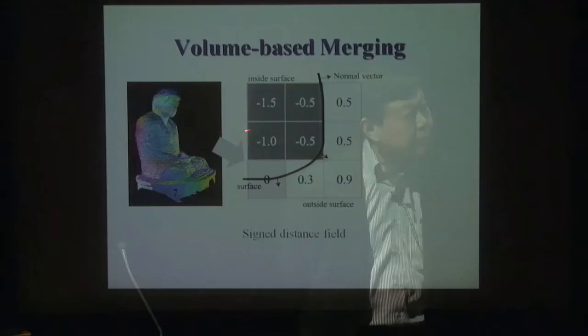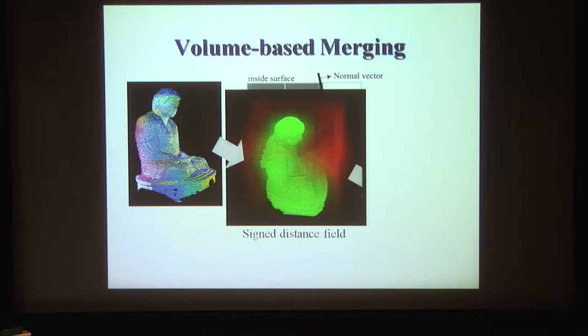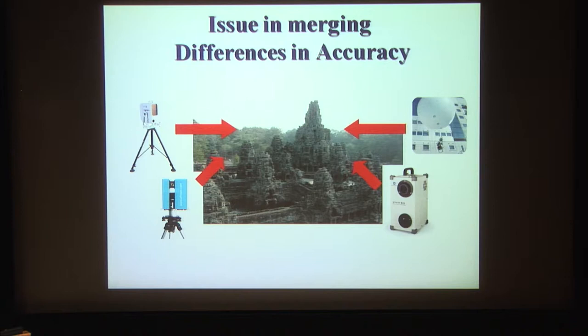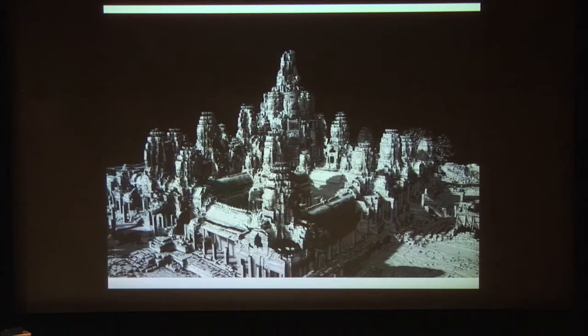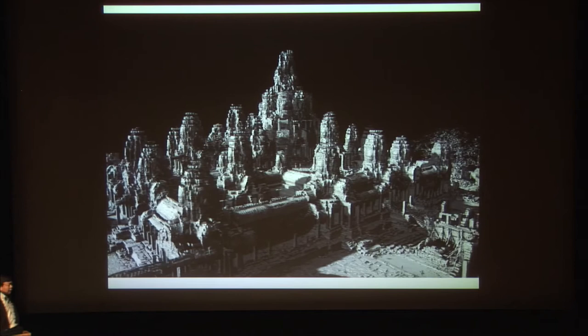Once you obtain relative relations, you have to connect data smoothly by considering sensor reliability. There is a famous merging algorithm called volumetric-based merging, but in our case one sensor has 5mm accuracy, one has 0.1mm accuracy, and another has 5cm accuracy — so simple merging doesn't work. We came up with a confidence-based consensus surface algorithm to connect everything together. The result: a 150m × 150m × 30m structure represented at 1cm resolution.